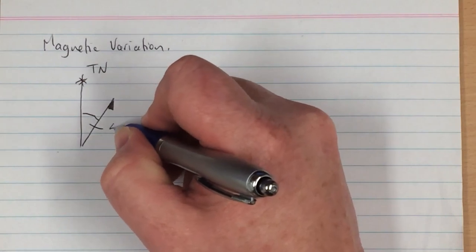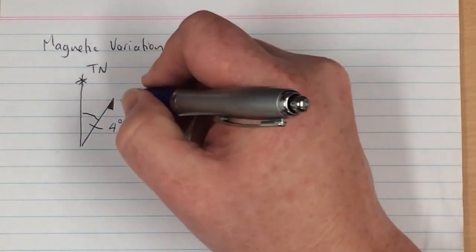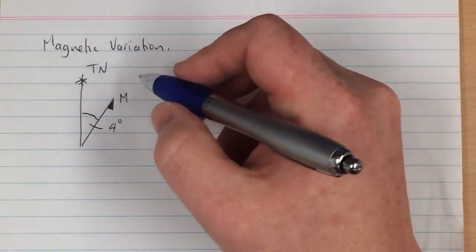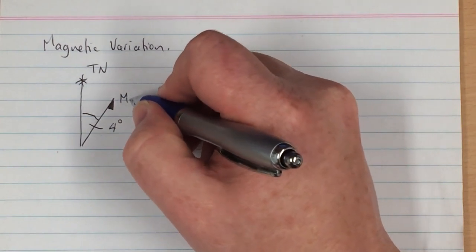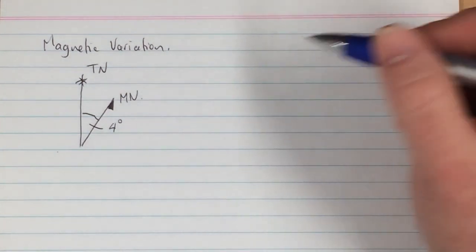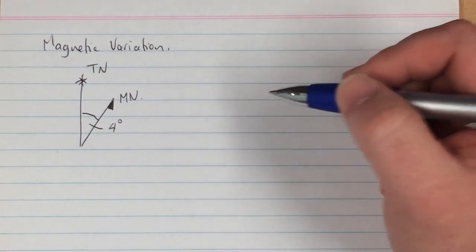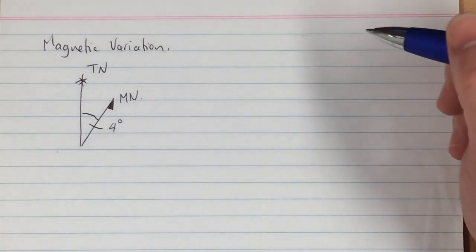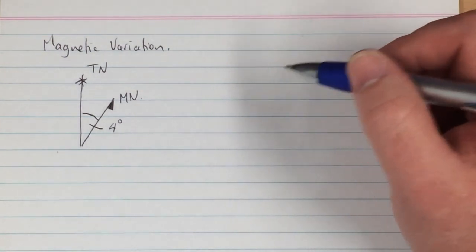For example, in this case the magnetic variation is 4 degrees. What complicates matters is magnetic north actually changes over time. This is referred to as variance.